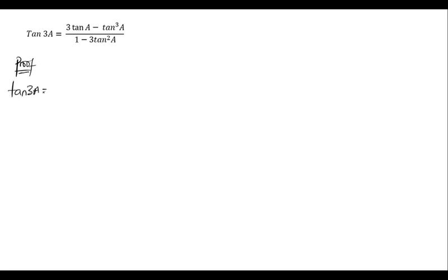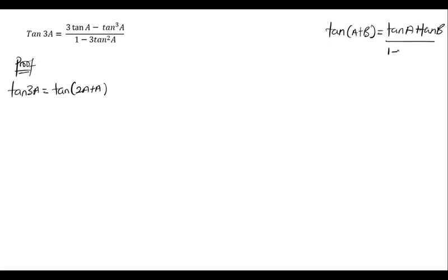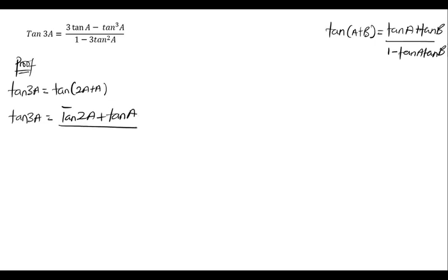Tan 3a can be written as tan(2a + a). We know that the expansion of tan(a + b) is equal to tan a plus tan b, all over 1 minus tan a tan b. So from that expansion, we can say tan 3a equals tan(2a + a), which can be written as tan 2a plus tan a, all over 1 minus tan 2a tan a. Let's make this equation 1.